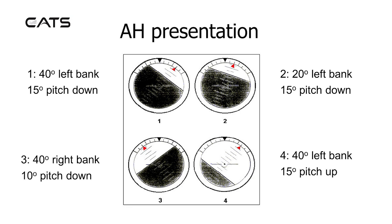The artificial horizon presentation: The first image shows 40 degrees of left bank and 15 degrees pitch down. Look for where the aircraft symbol is - it's in the dark ground area, so the aircraft is pitched down, and the pointer is to the left.